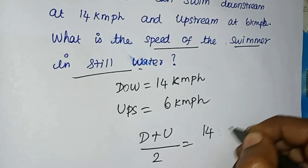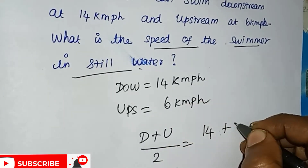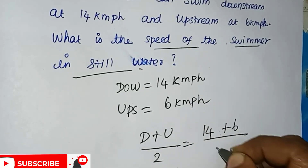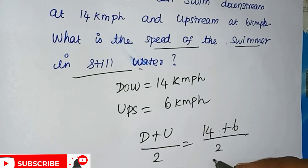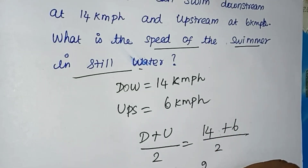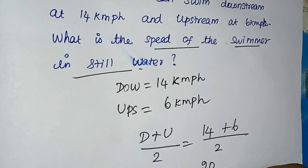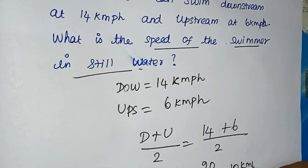Downstream value is 14 km per hour and upstream is 6 km per hour. So, speed of swimmer in still water equals D plus U divided by 2, which is 14 plus 6 divided by 2, giving 10 km per hour.